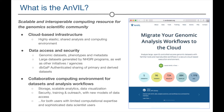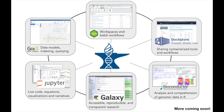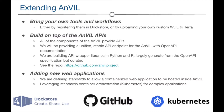Finally, and most importantly, ANVIL is a collaborative environment featuring many of the analysis tools and resources that you already use. Today, the major components of ANVIL include Terra for workspaces and batch computing, Gen3 for sophisticated data modeling and querying, DocStore for sharing containerized tools and workflows, plus R, Bioconductor, Jupyter Notebooks, and Galaxy for highly interactive computing and data analysis. There are also many ways to extend ANVIL to include additional tools and capabilities that we don't currently offer.